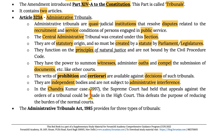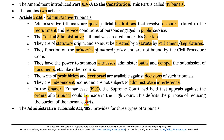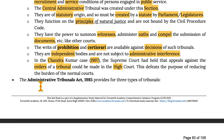In Chandrakumar's case of 1997, the Supreme Court held that appeals against the order of a tribunal could be made in the high court. This defeats the purpose of reducing the burden of normal courts.